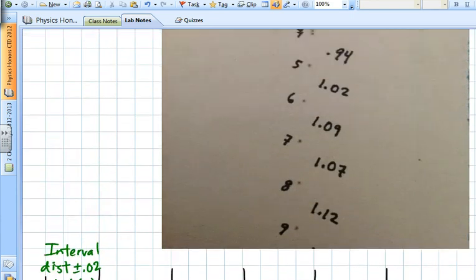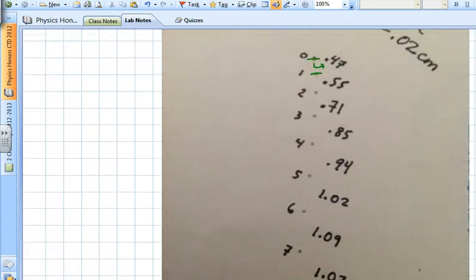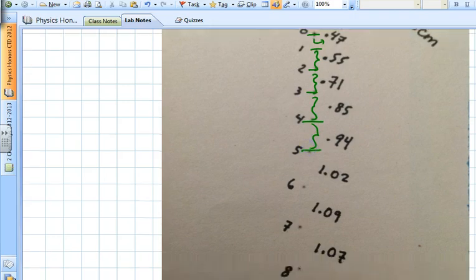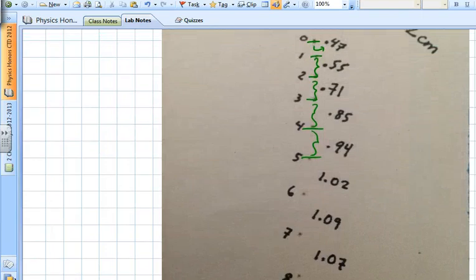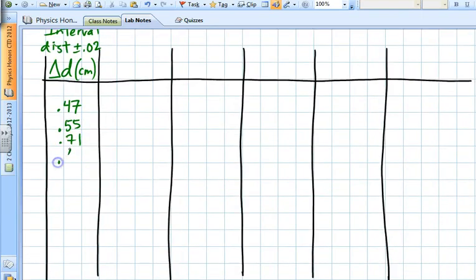My first interval distance was 0.47, and then you can see that I measured a couple others. I had 0.55 was the distance between 0.1 and 0.2, and then 0.77, and then 0.85 and 0.94, and so on. So I'm going to just put those first few in the data table: 0.55, 0.71, 0.85, and 0.94.